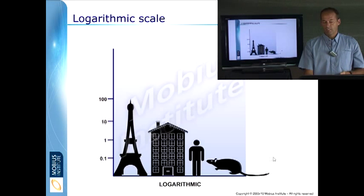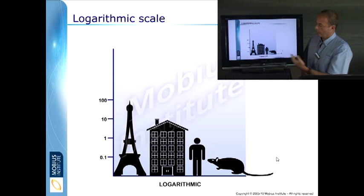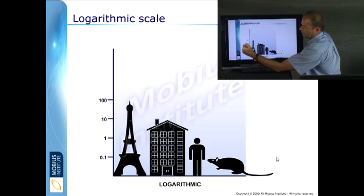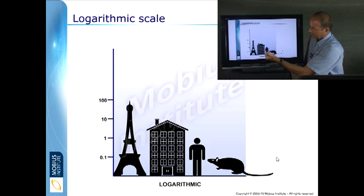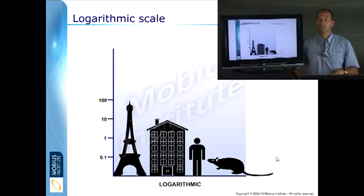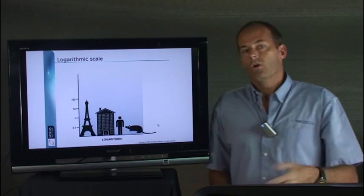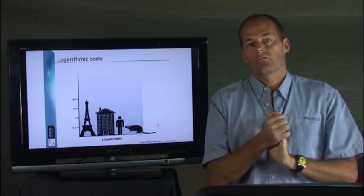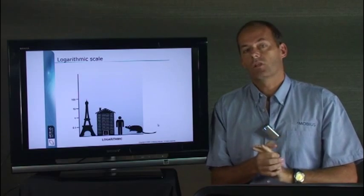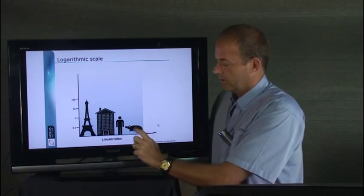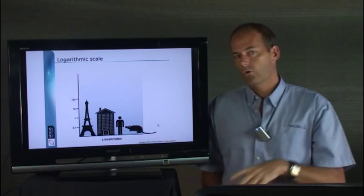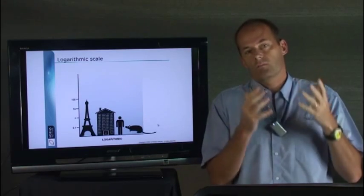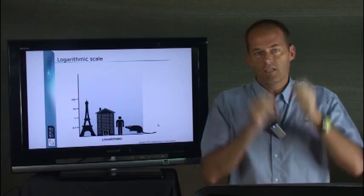In a log scale, guess what happens? Now, we are looking at a logarithmic scale. 0.1, 1, 10, 100. I can see the mouse. I can see the man. I can see the house or the building and I can see the tower. Okay, you're not looking for mice and men and towers and buildings, but if these were sidebands or little harmonics or noise floor, you can see them all on the same scale.